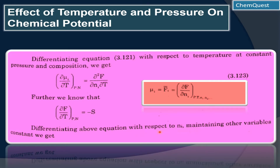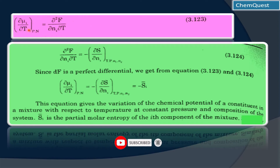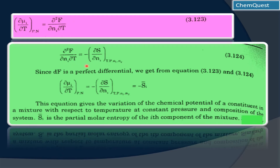Now what we have to do is differentiate the entropy equation with respect to nᵢ, keeping the other variables constant. So this gives us: (∂μᵢ/∂T) at constant pressure and number of moles equals ∂²F / (∂n₁ ∂T). And when we differentiated the previous equation with respect to number of moles, we got −∂S/∂nᵢ at constant temperature, pressure, and number of moles of components 1 and 2.